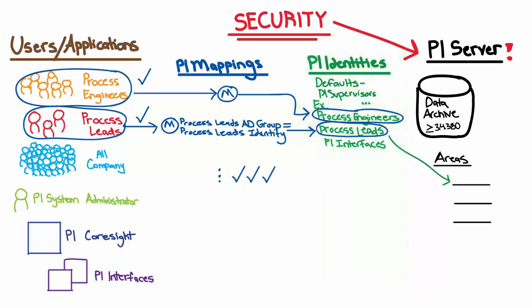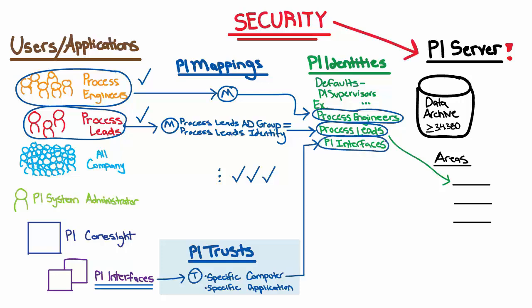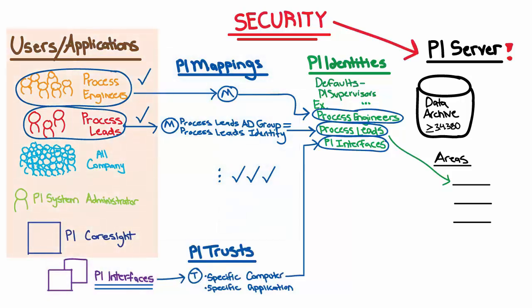The only exception to this is PI Interfaces. For PI Interfaces, we need to set up trusts. With a trust, we specify the computer that the interface is running on and also its application name. As a simple rule of thumb, you can just remember that trusts are for PI Interfaces and mappings are for everything else — both our users and our applications.